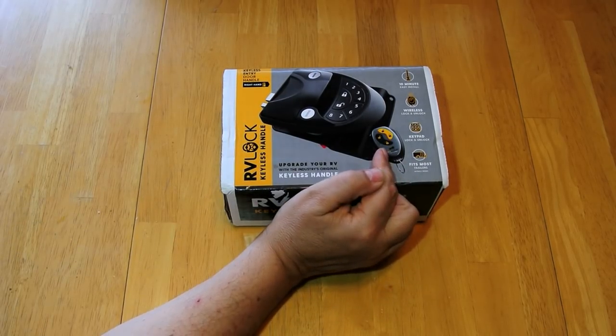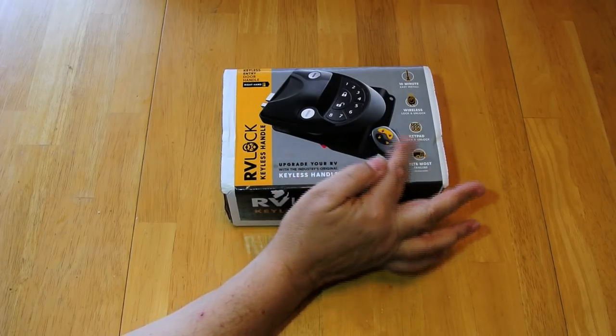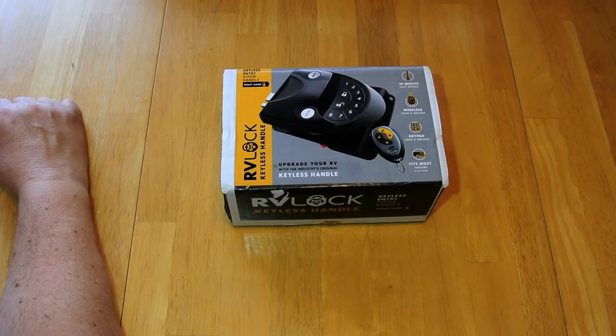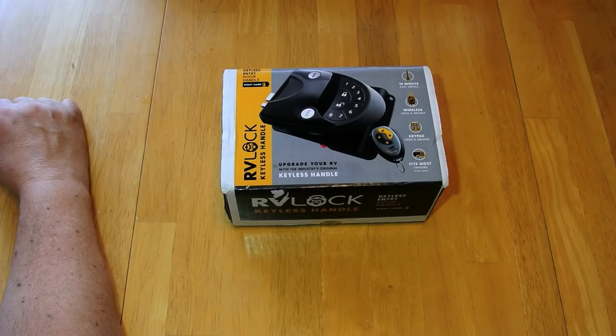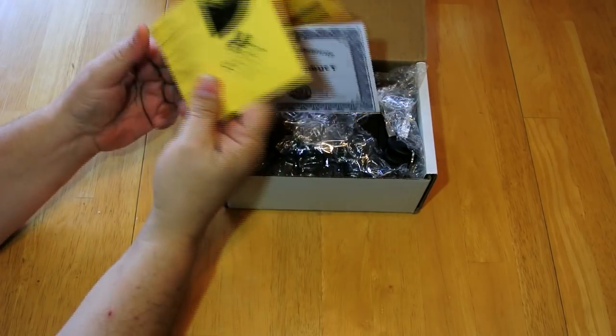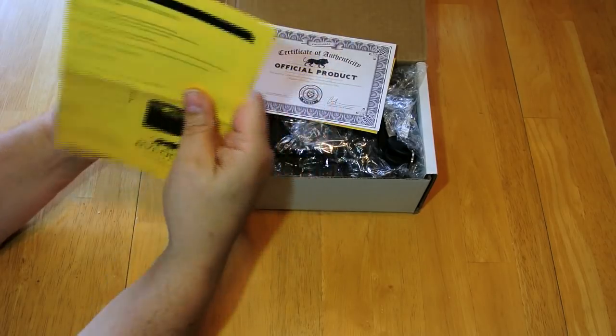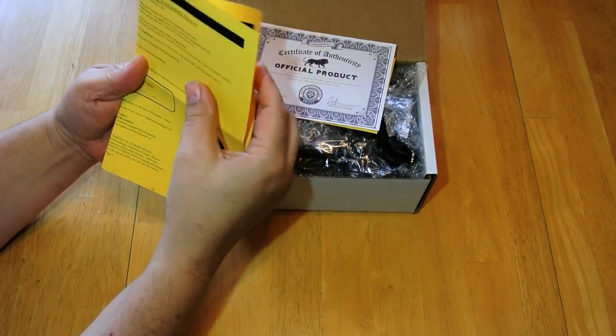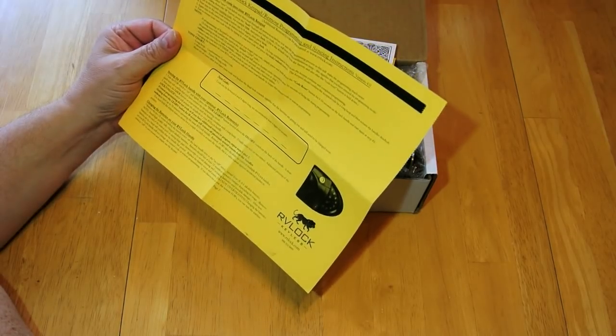It comes with one wireless fob. We probably should have ordered the second fob when we bought this but we didn't realize it, but you can buy extra fobs. And just a real small set of instructions, not a whole lot, mostly just the programming and syncing instructions.